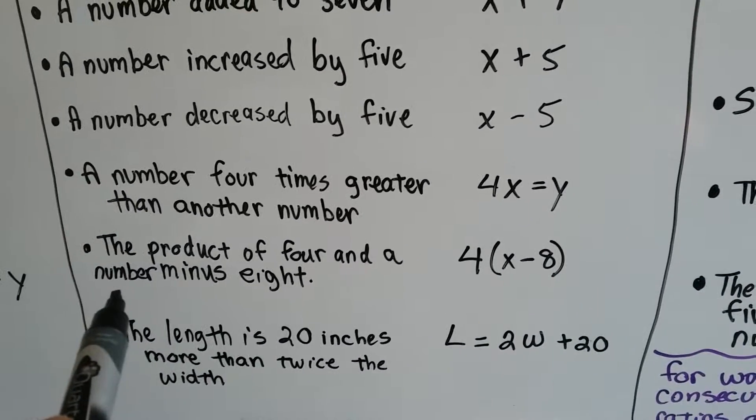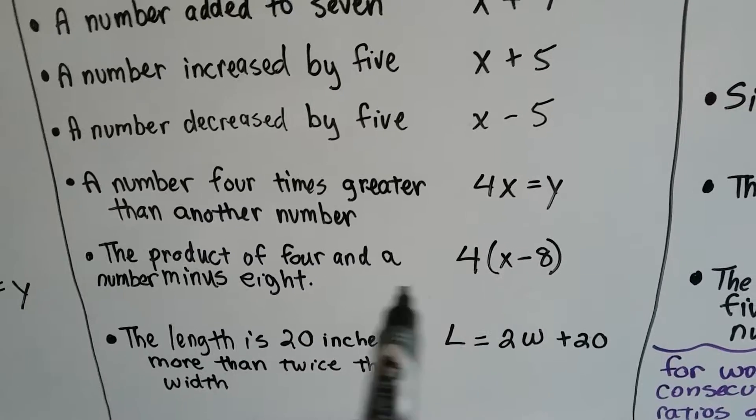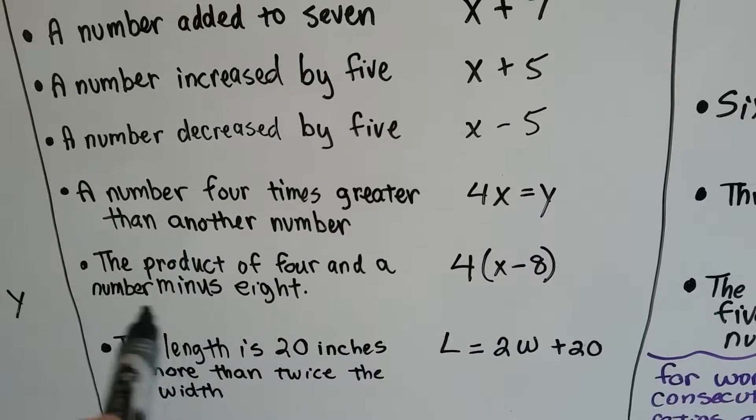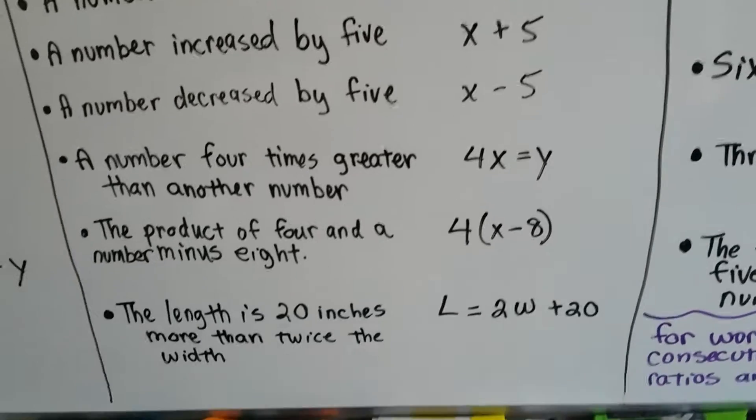The product of 4 and a number minus 8. The product tells us it's multiplication, 4 times something, a number x minus 8. So it's 4 times x minus 8.